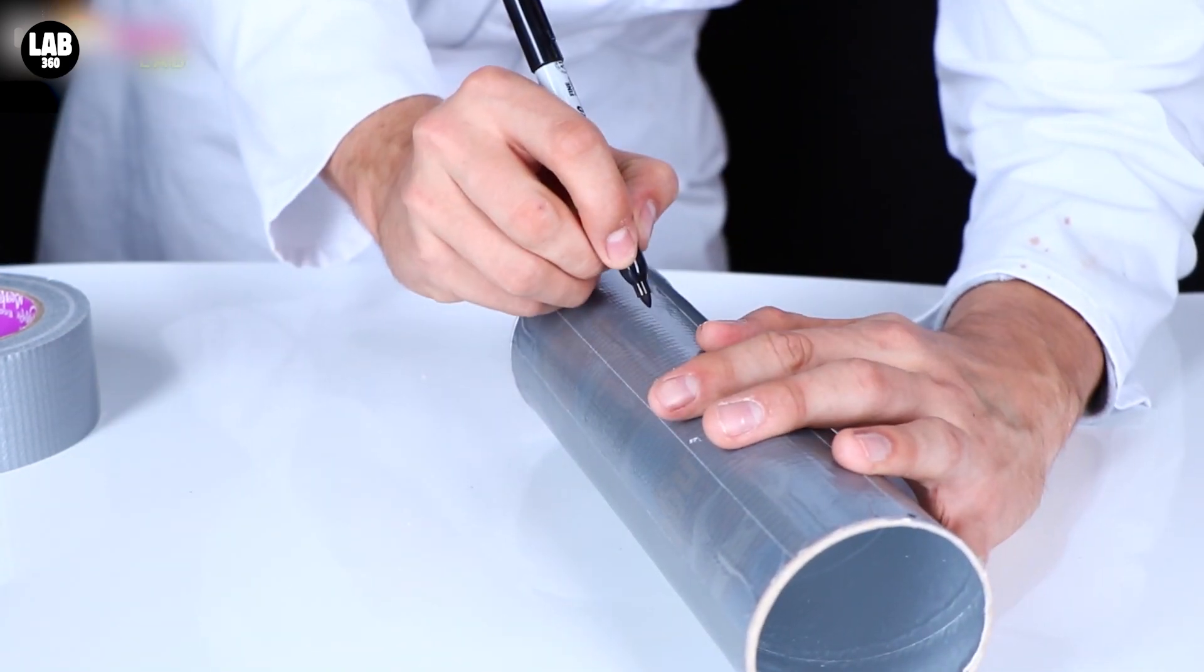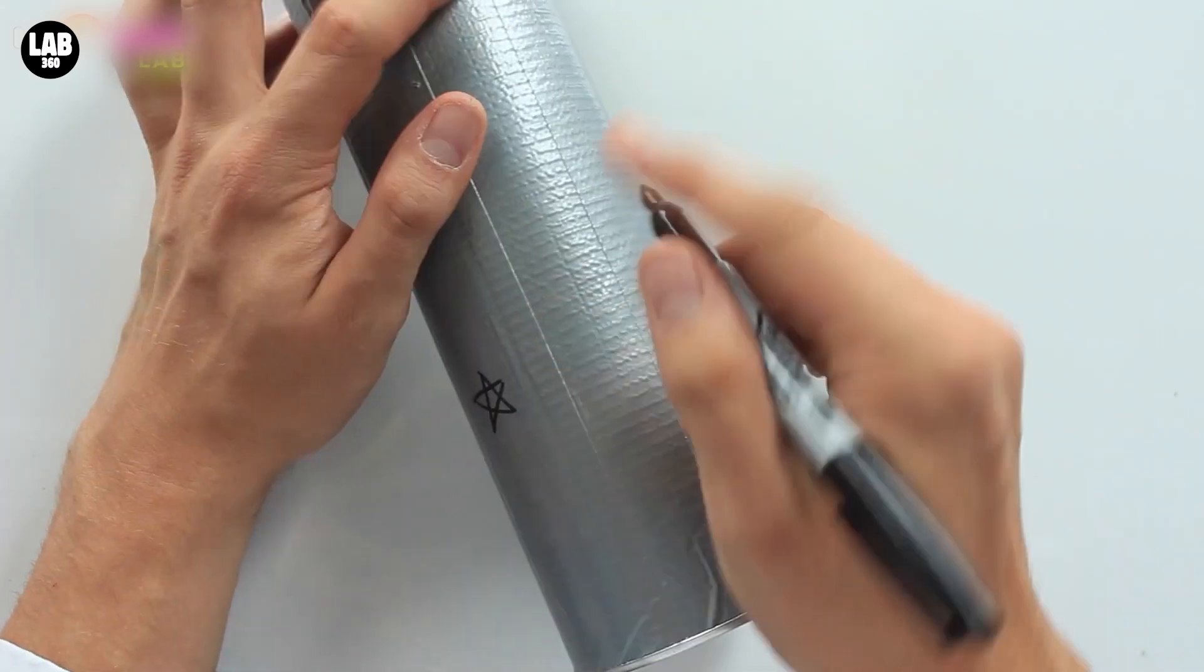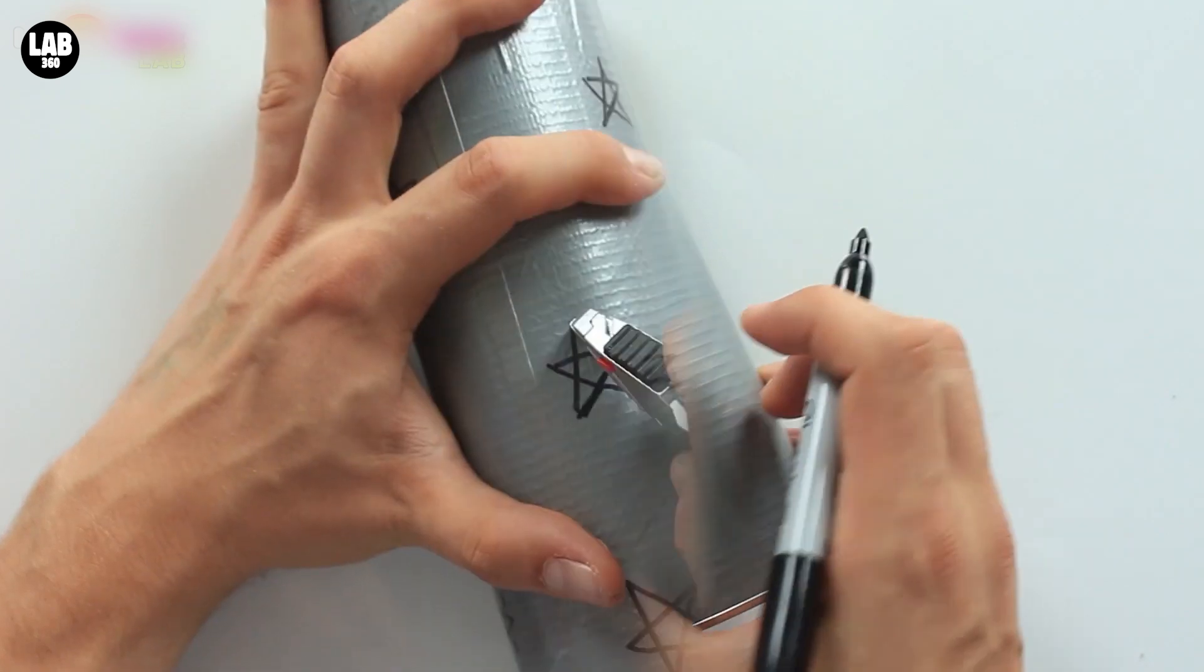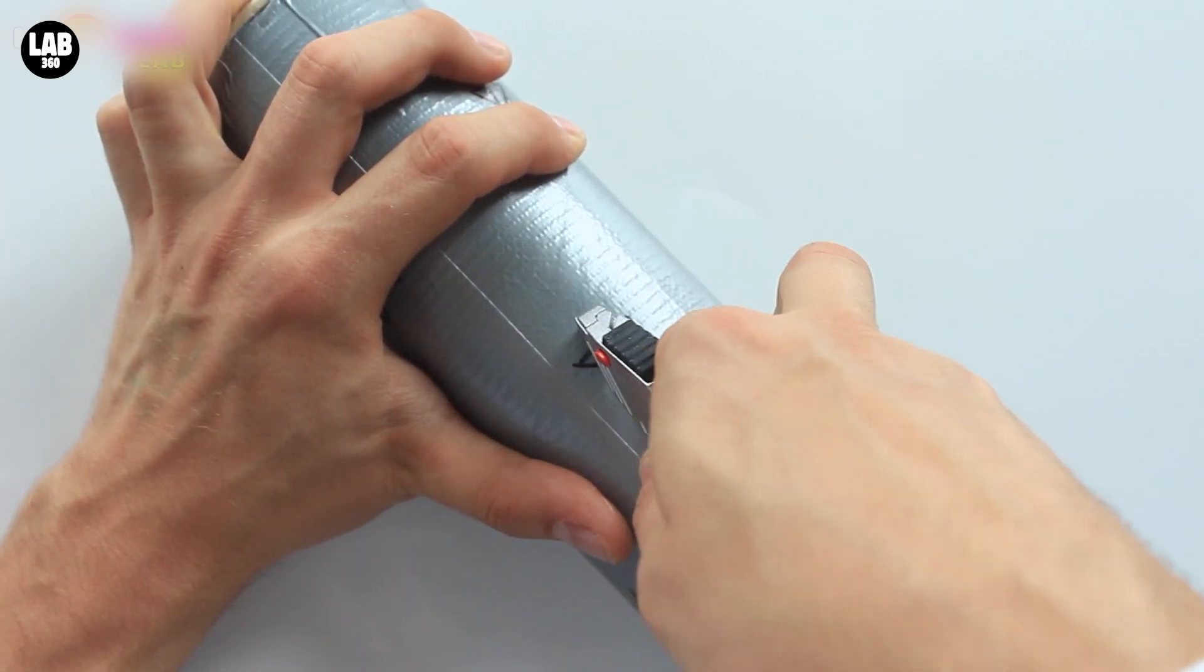Now, draw some shapes onto the side. I've decided to draw some star shapes. They don't need to be very big, but they need to be big enough for you to cut out easily, so it's best to keep the shapes simple.